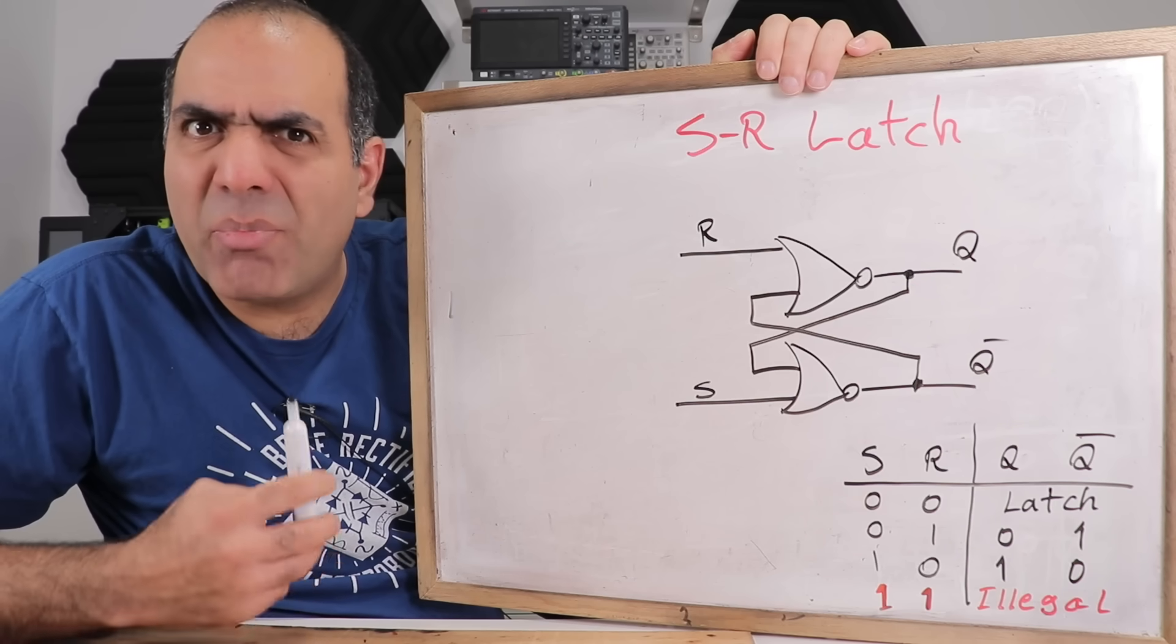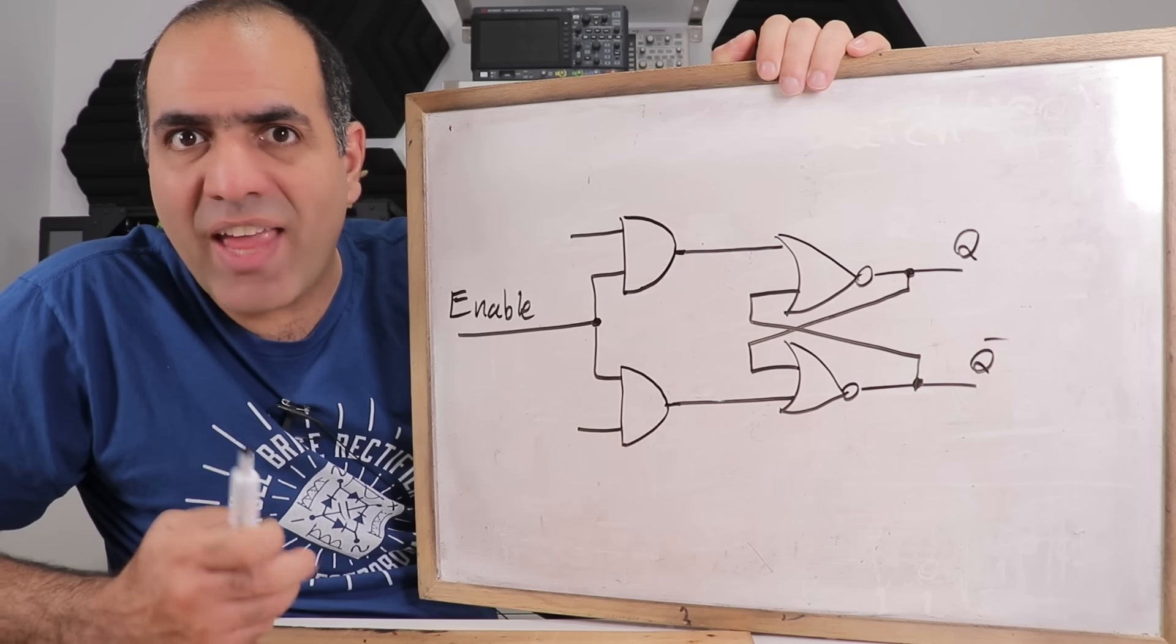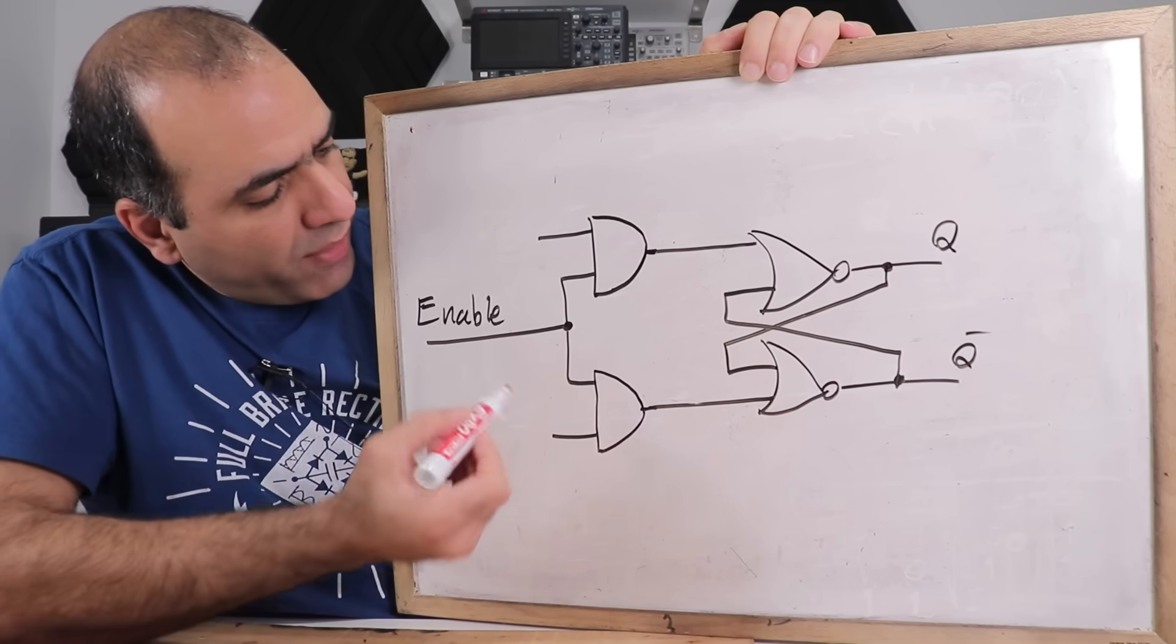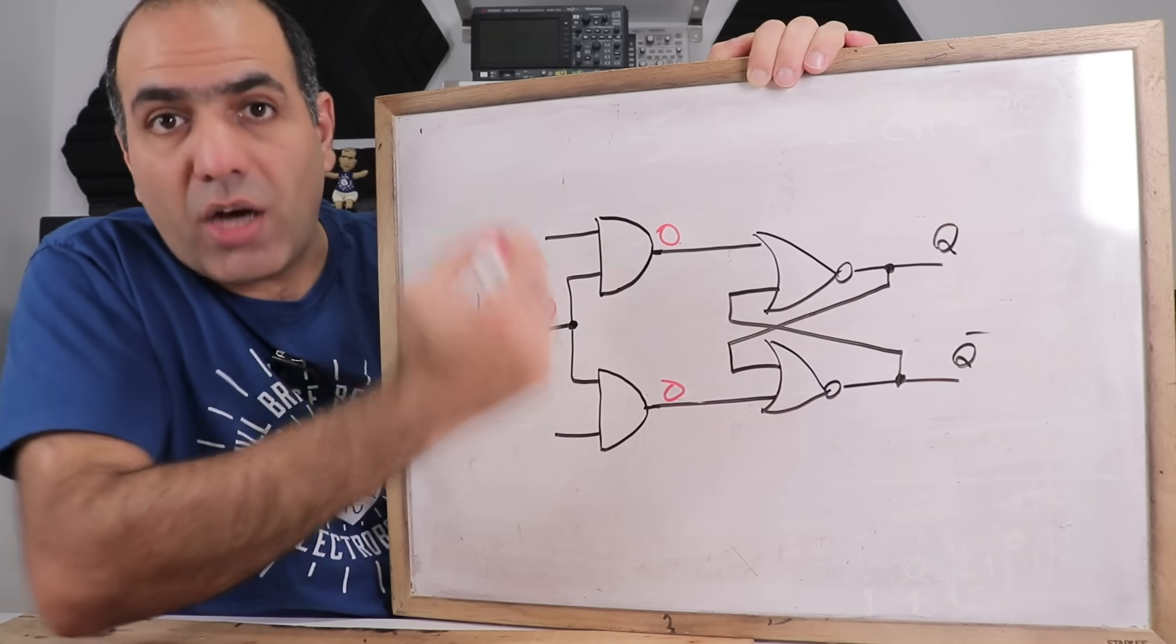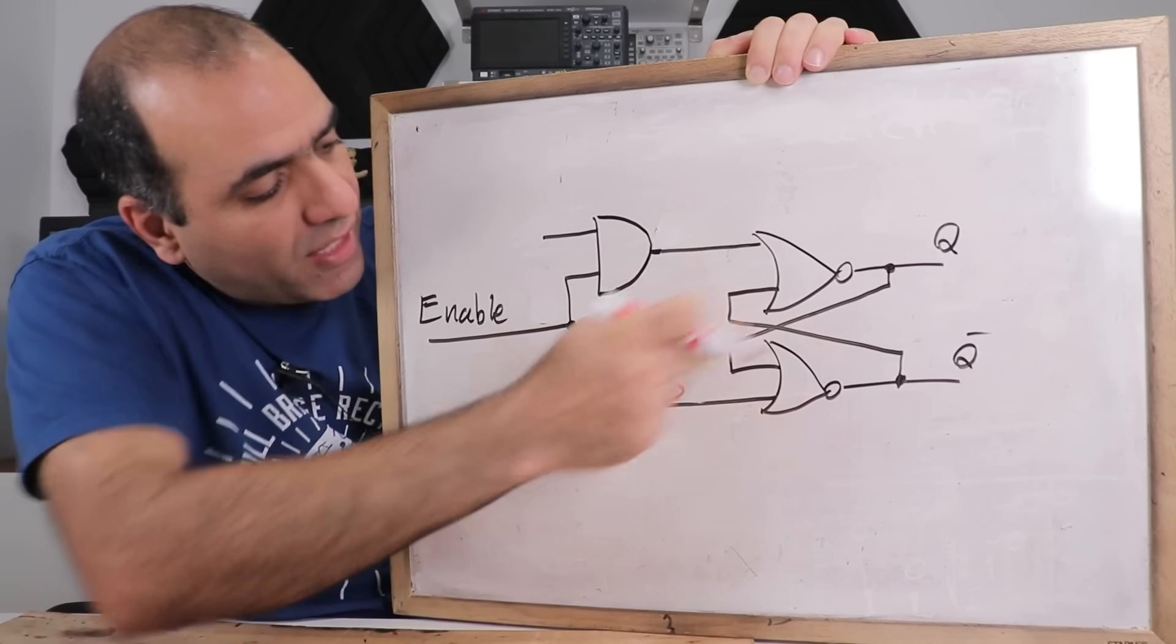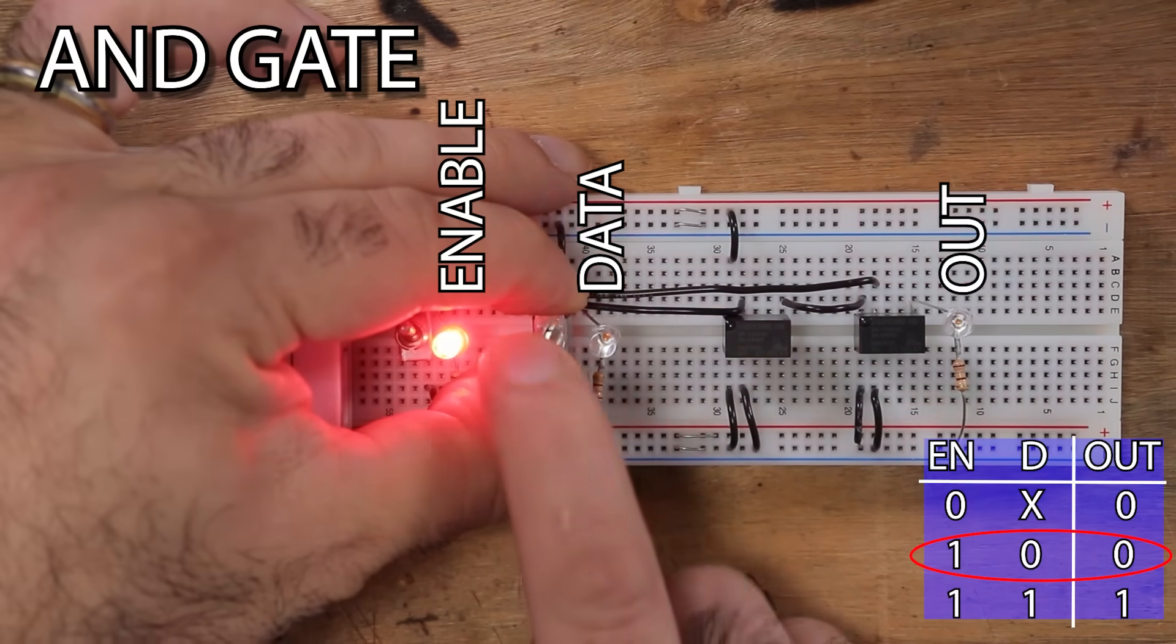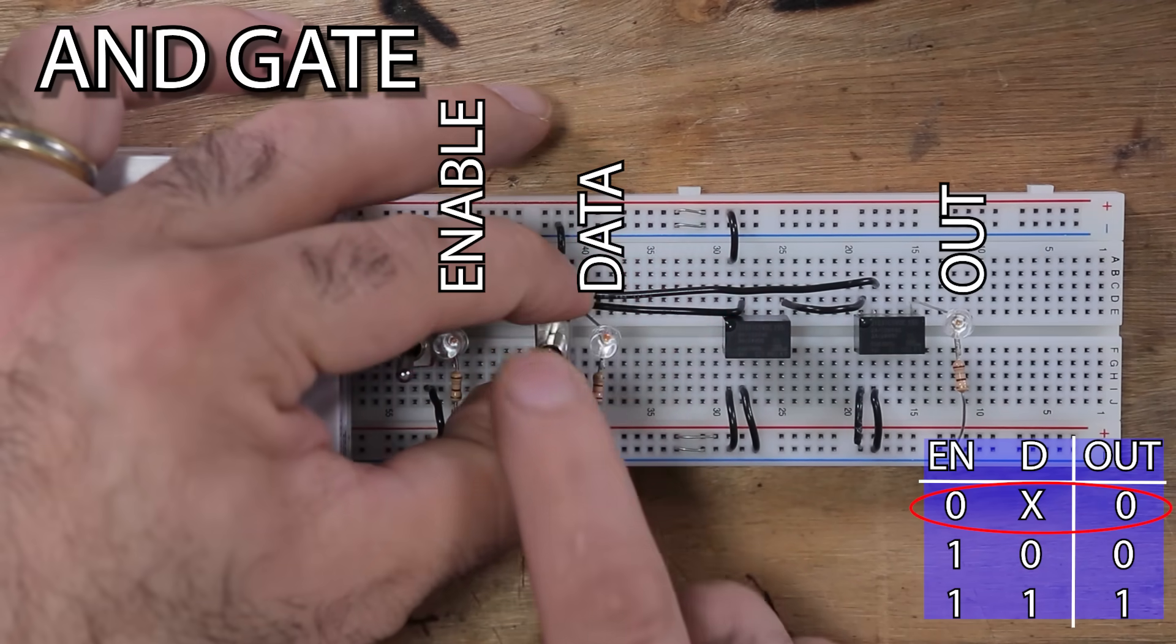They call this circuit a latch because it latches and holds the previous state. But let's get smarter with this circuit. What if I added AND gates to the inputs of this circuit, tie the inputs together and call it enable? With this, if the enable line is zero, the output of the AND gates are zero no matter how the other inputs change. The other inputs can only affect the latch if the enable line is high, because with enable high, it is up to the other input to change the output. So here, AND works as a real gate with enable as the gatekeeper.